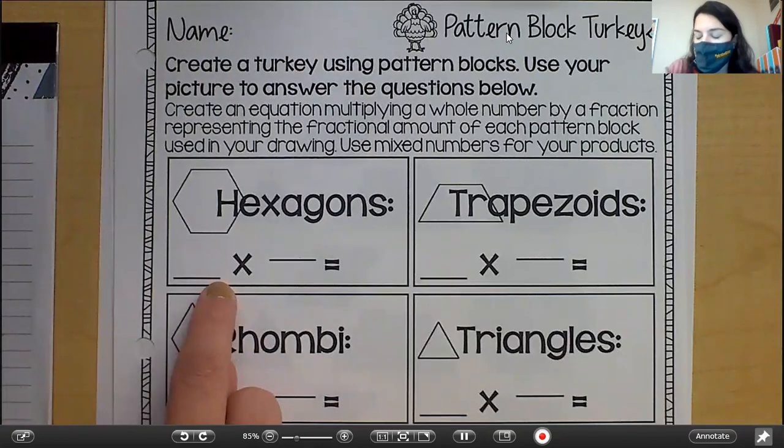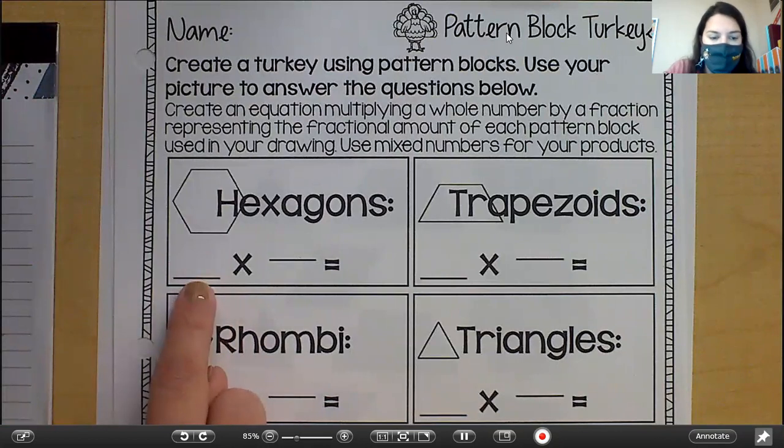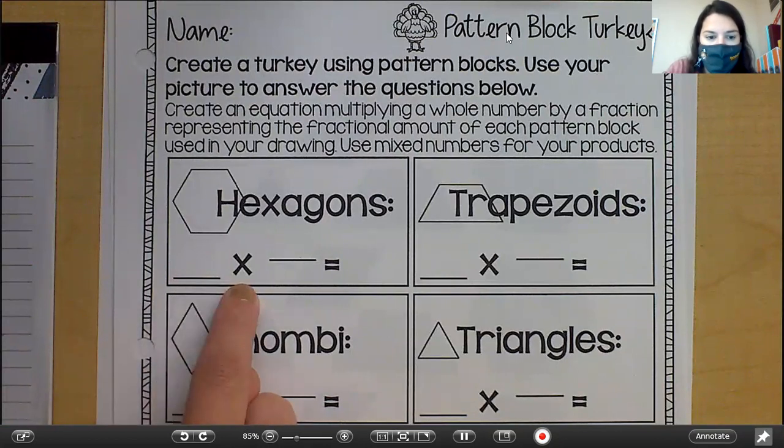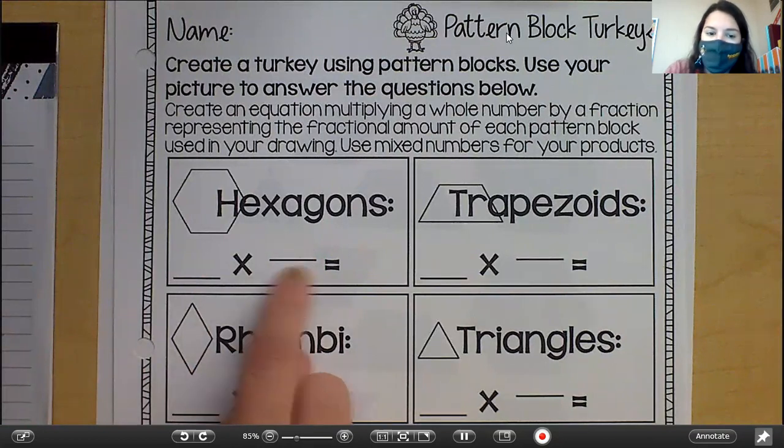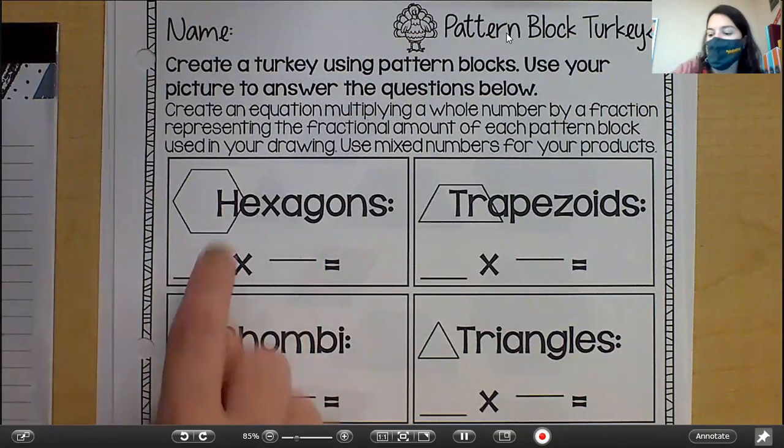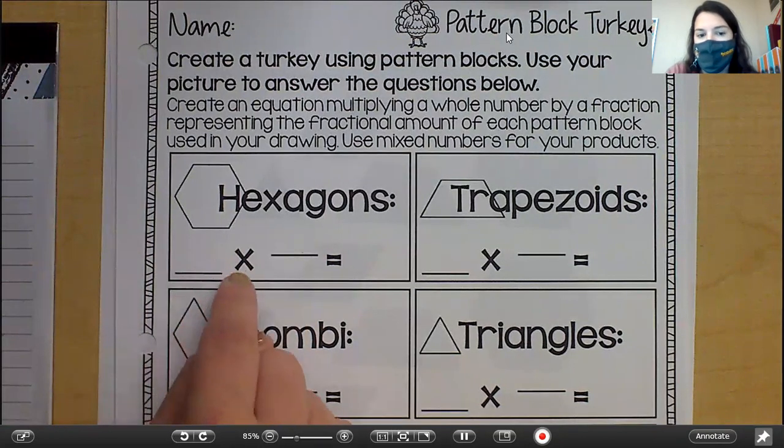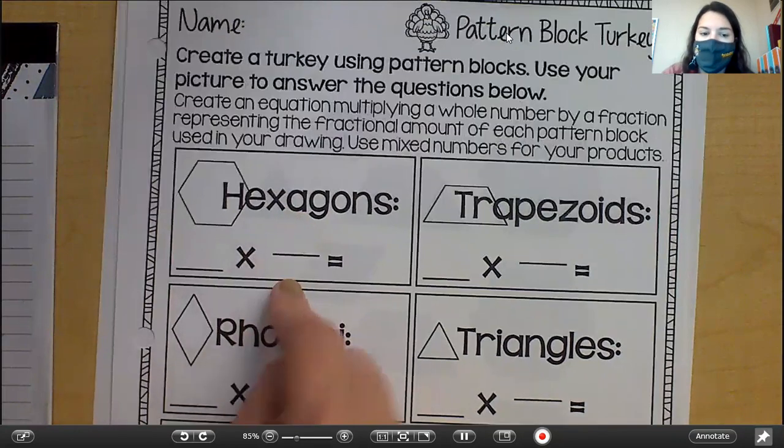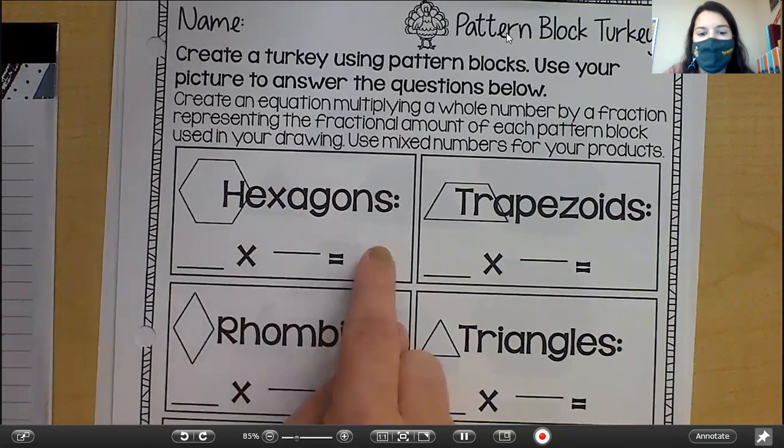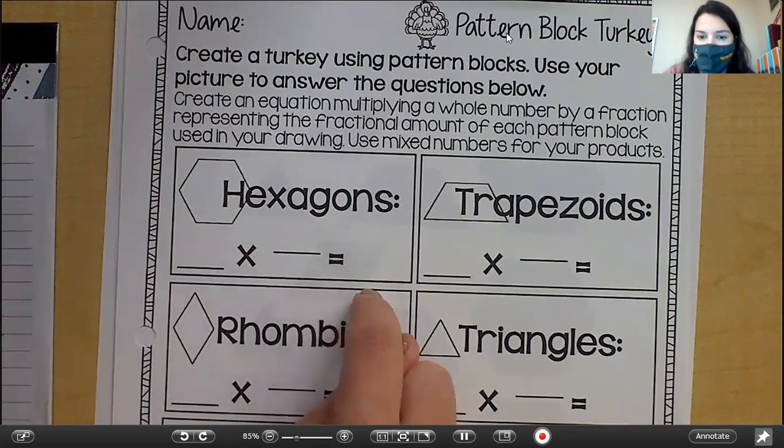So let's say you use 10 hexagons. You would have 10 times your hexagon was one out of how many total pattern blocks you used. So for mine, for example, I had seven hexagons times one over 44 blocks. So seven times one over 44. When you multiply seven times one is seven over 44. So my fraction would be seven over 44.